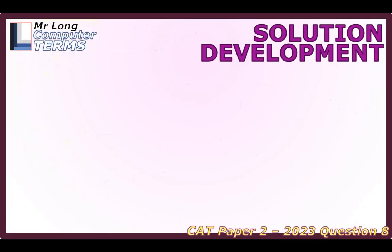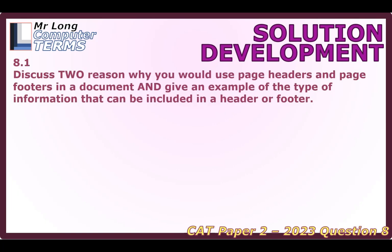We can start off with question 8.1. It says: discuss two reasons why you would use page headers and page footers in a document, and give an example of the type of information that can be included. The header and footer are those sections at the top and bottom of a page respectively, and whatever you put in them will appear on multiple pages.